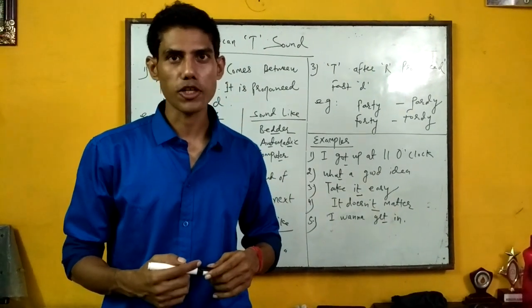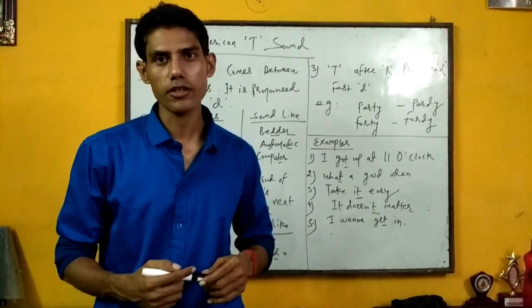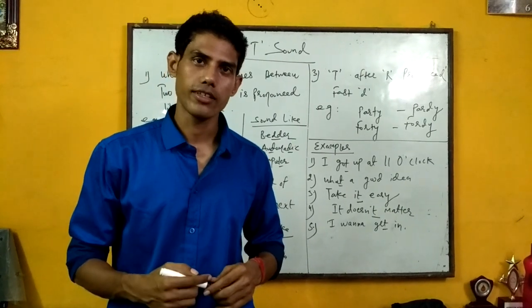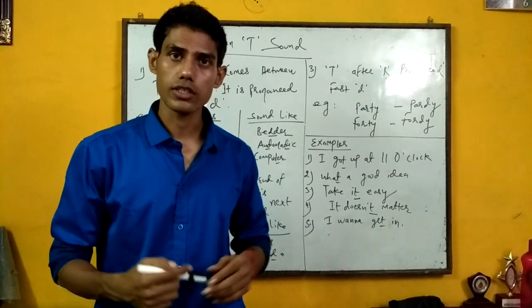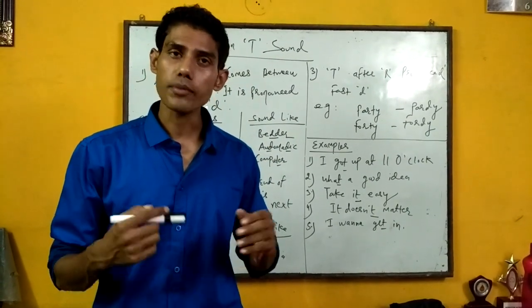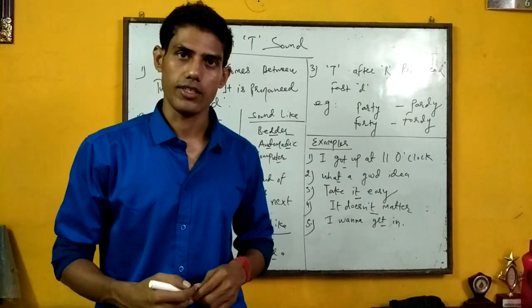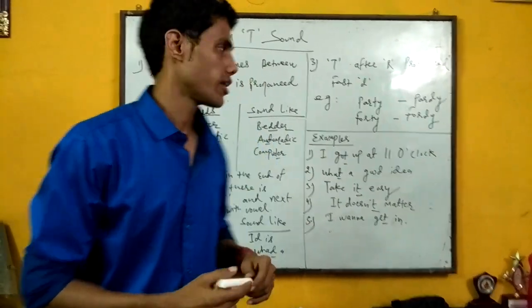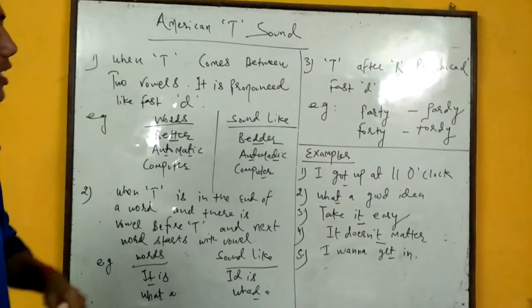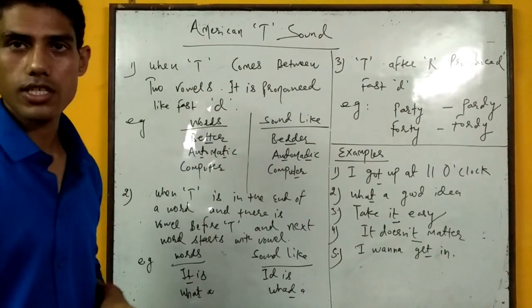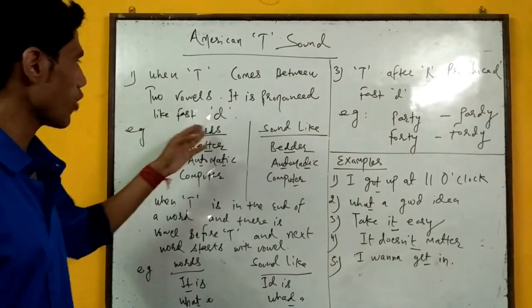Hello everyone, once again this is Prasham Bhakta and today we are going to talk about American T letter. So here we are going to have some rules and discuss how Americans pronounce T letter. So here are the rules. When T comes between two vowels, it is pronounced like flapped T.